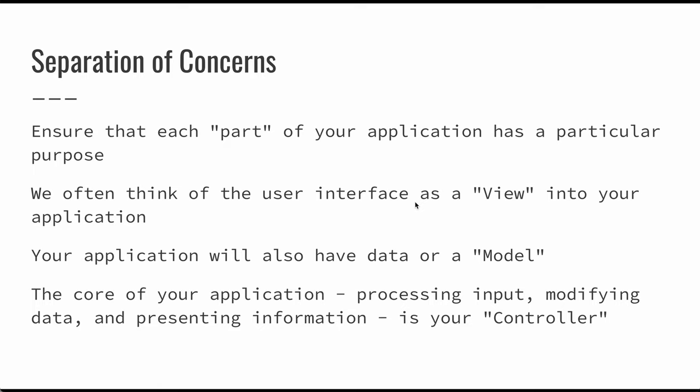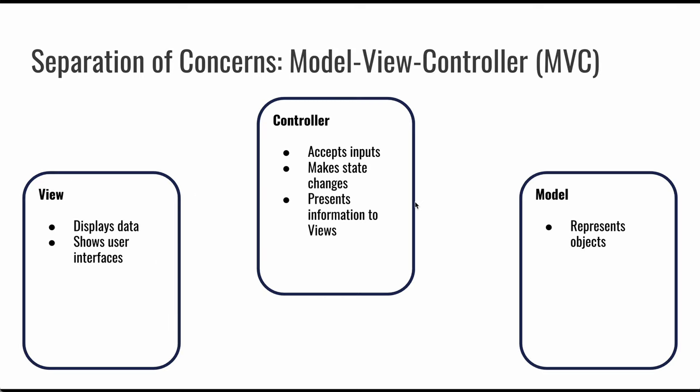This leads into the idea of separation of concerns, which is a really useful concept and design pattern because it allows us to make sure that each part of our application has a very particular and well-defined purpose. You might think of your user interface as a view into your application. You might also think of your application as having some kind of data — that's your model. And then there's the core of your application, the things it does: processing input, transforming data, modifying data, presenting information. This is going to be your controller. This leads us to what we typically call the Model-View-Controller (MVC) pattern in software development.